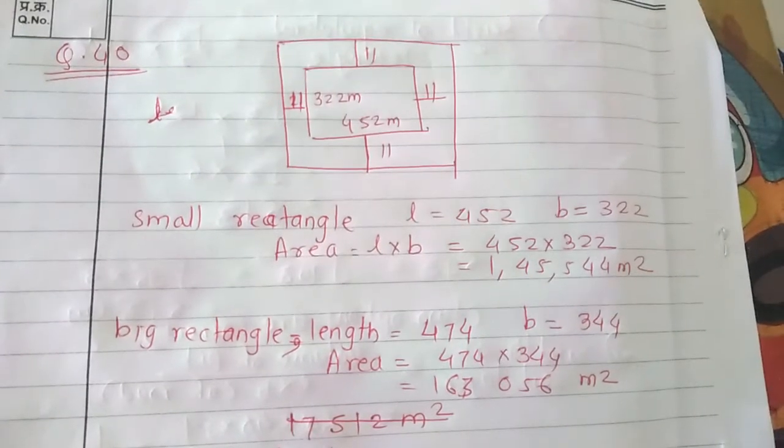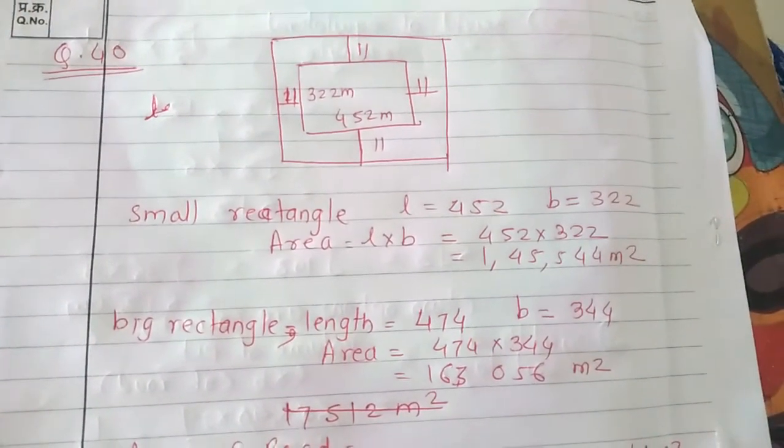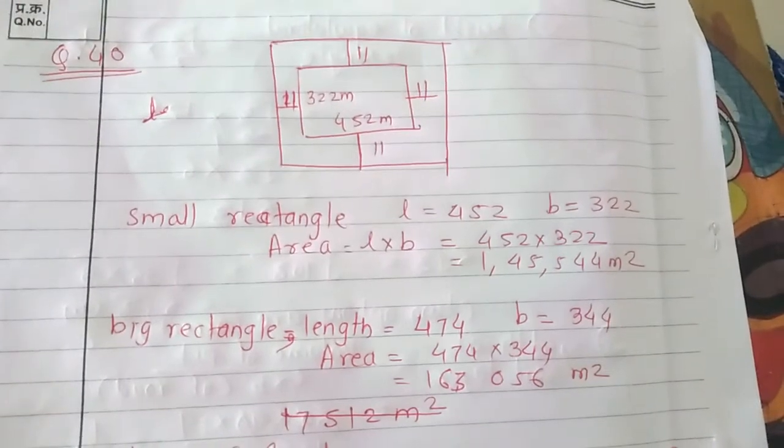Small rectangle has length 452 meters and breadth 322 meters. We can find the area by length times breadth.